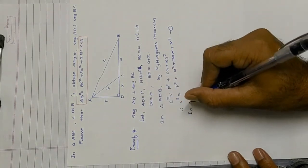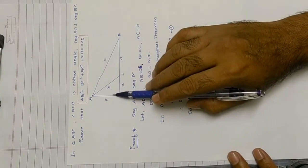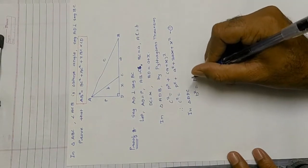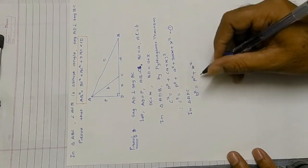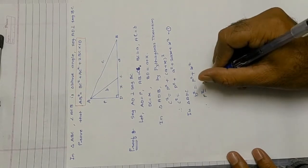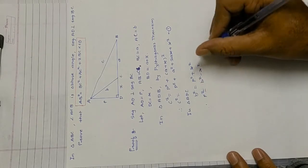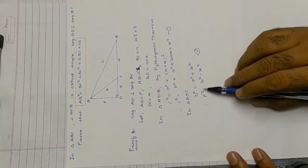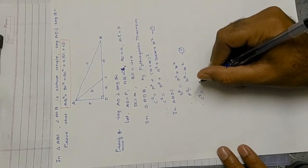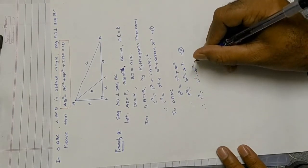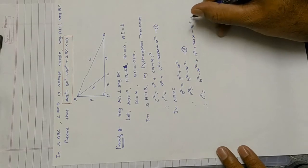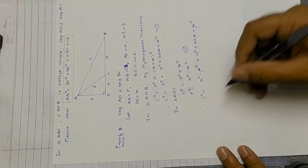In triangle ADC, it is again a right angle triangle with AC as hypotenuse, so: b² = p² + x². Isolating p²: p² = b² − x². This is equation number two.